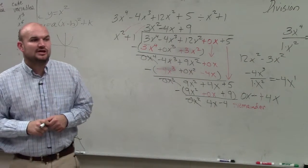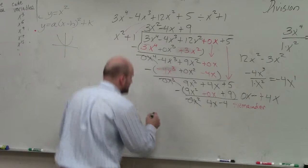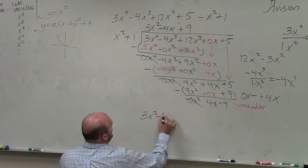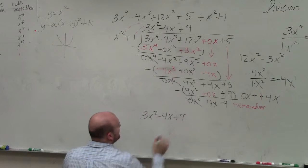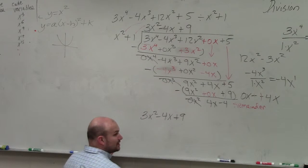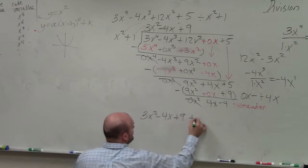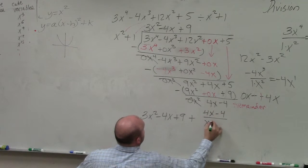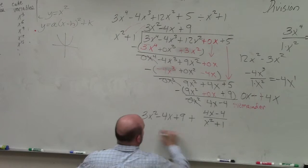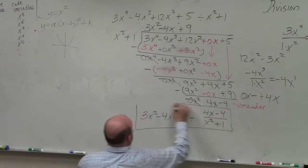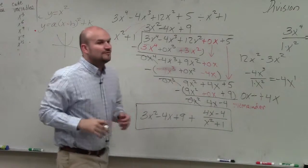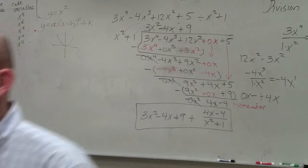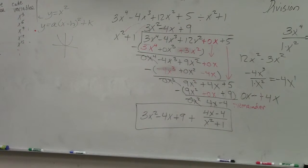So to write our answer, the quotient is 3x squared minus 4x plus 9. Now, since we have a remainder, I want you to write the remainder over your divisor. That is how you would write your answer. So if you have a remainder, add it to your quotient and then write it over your divisor.